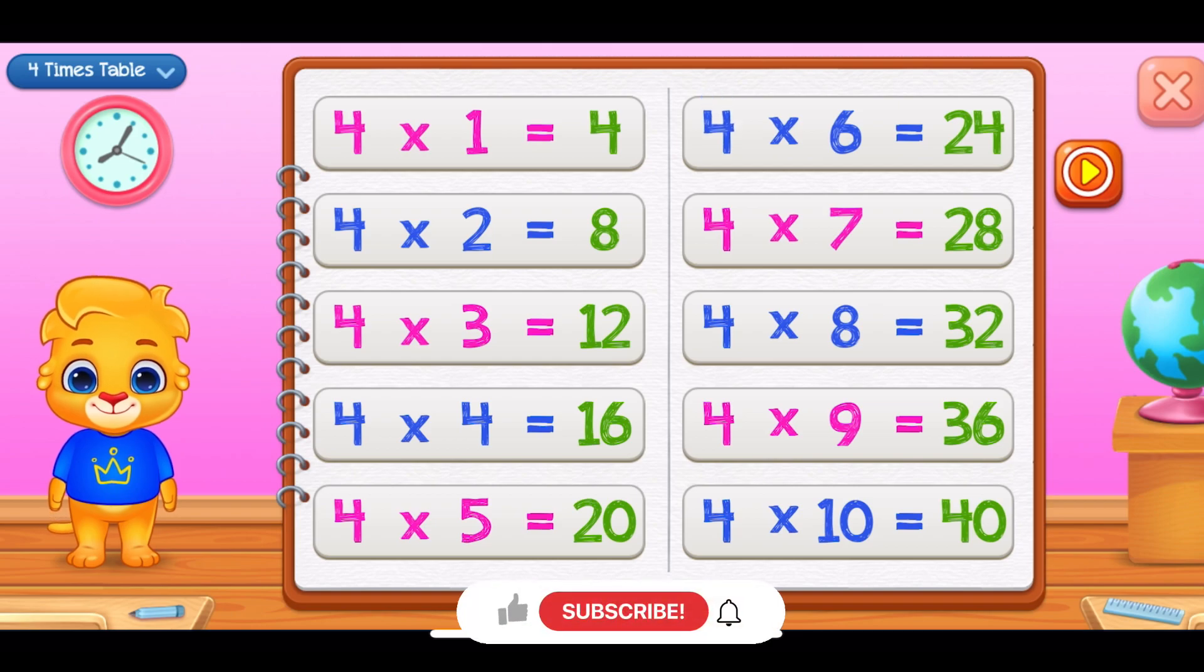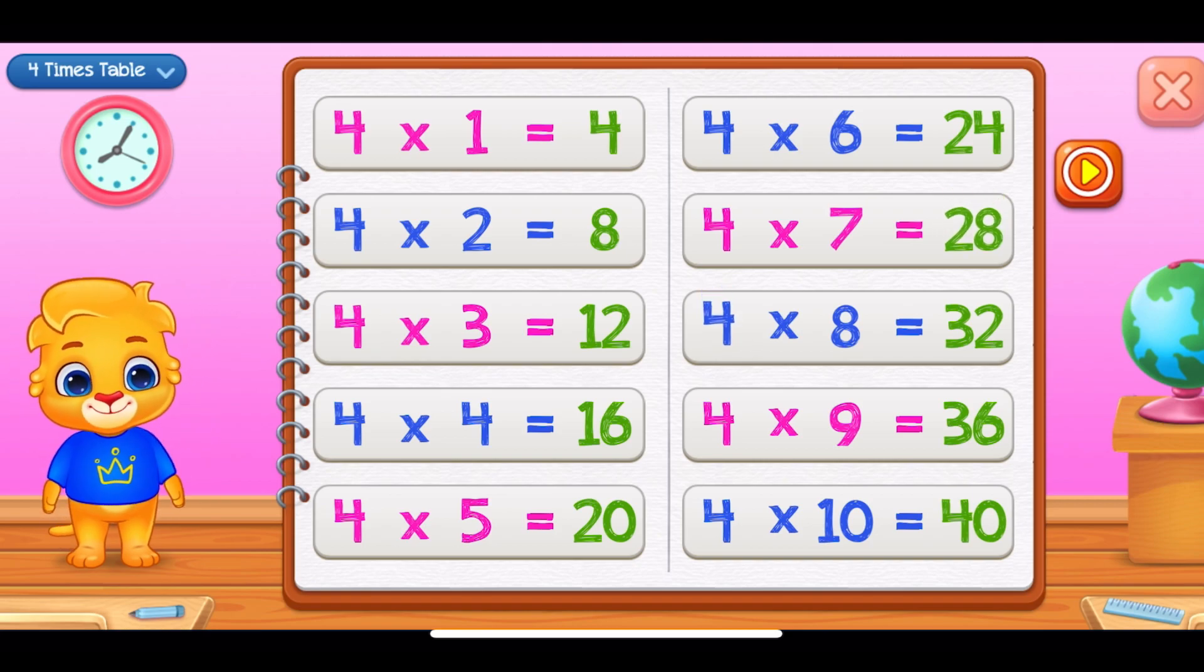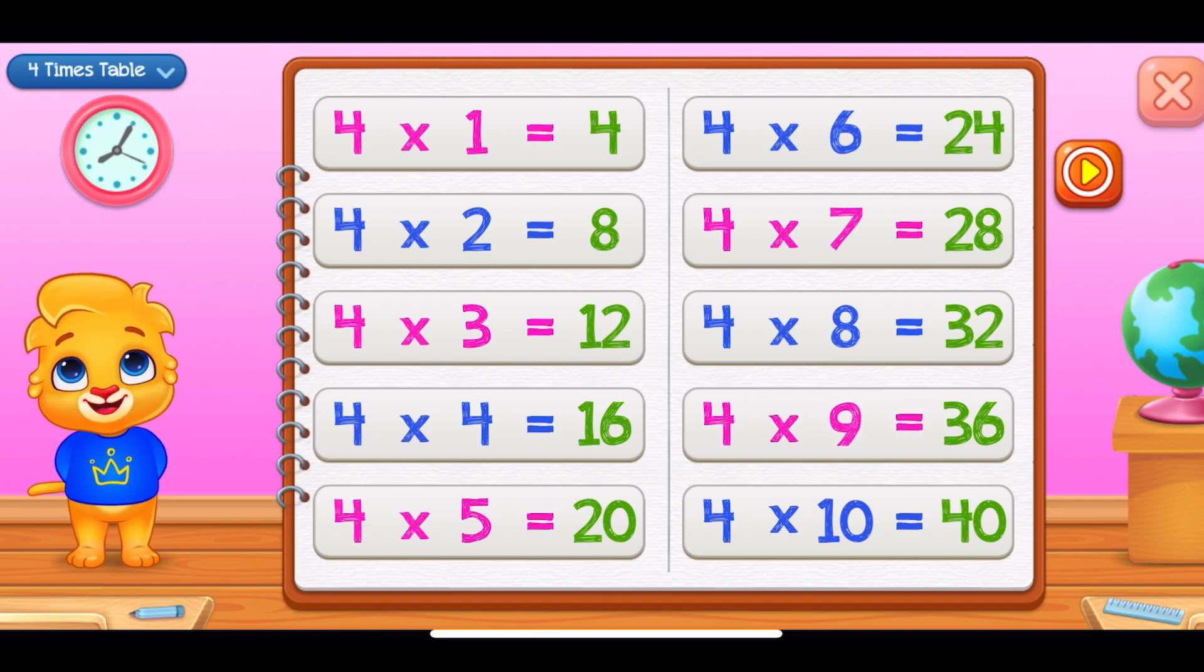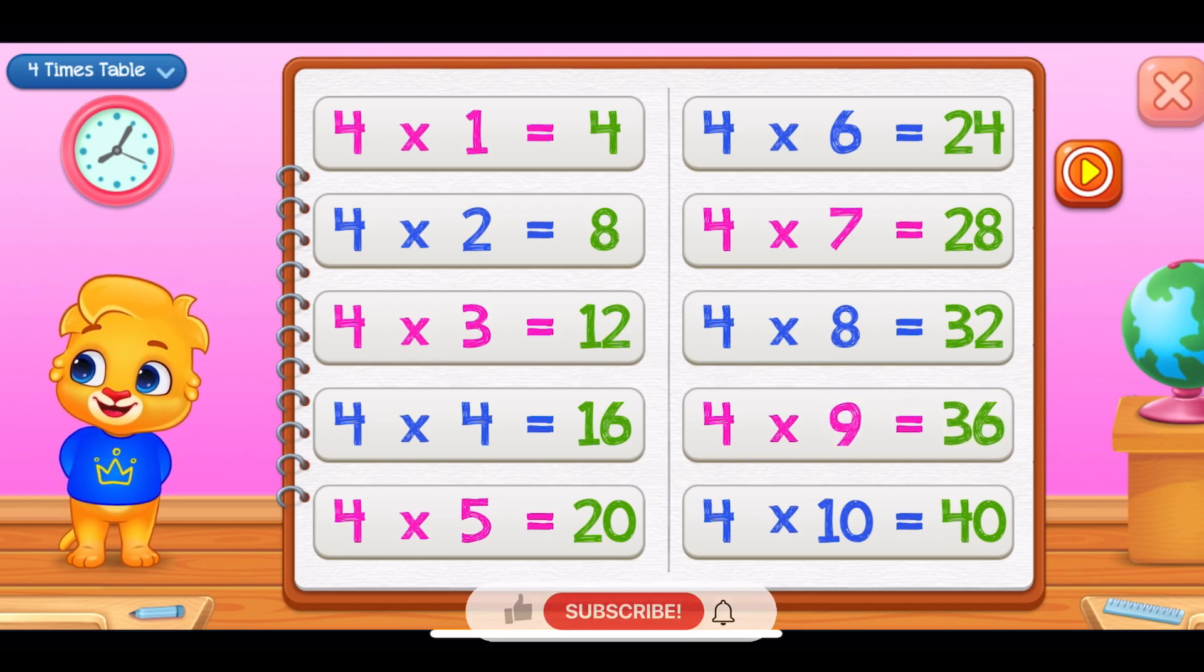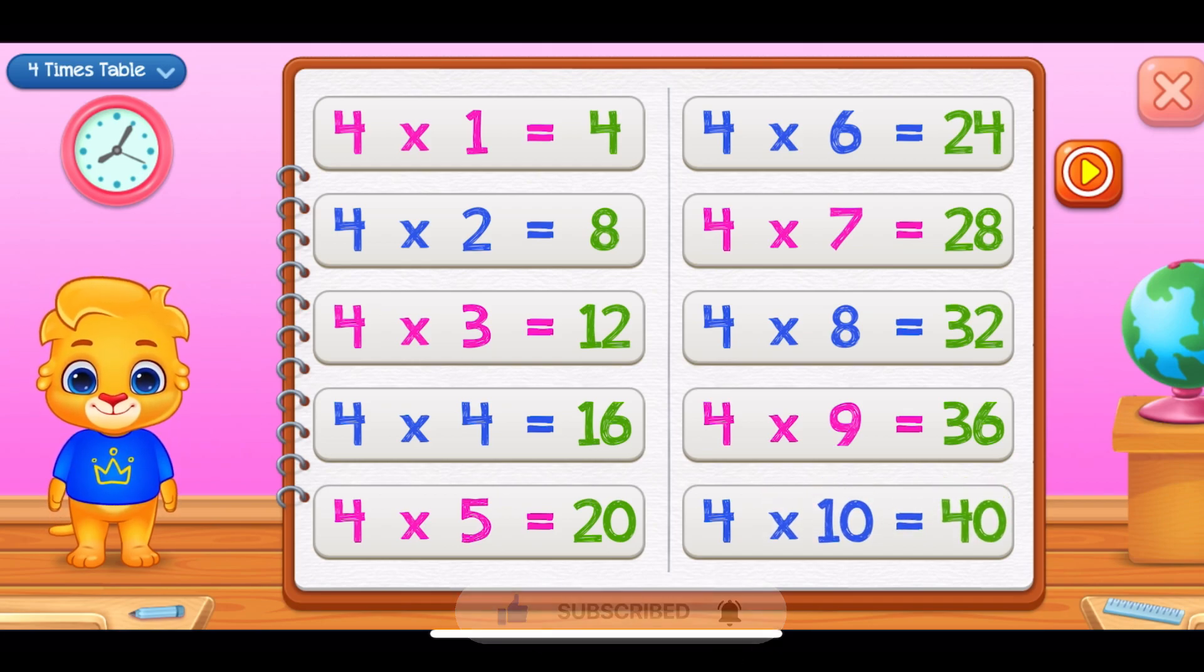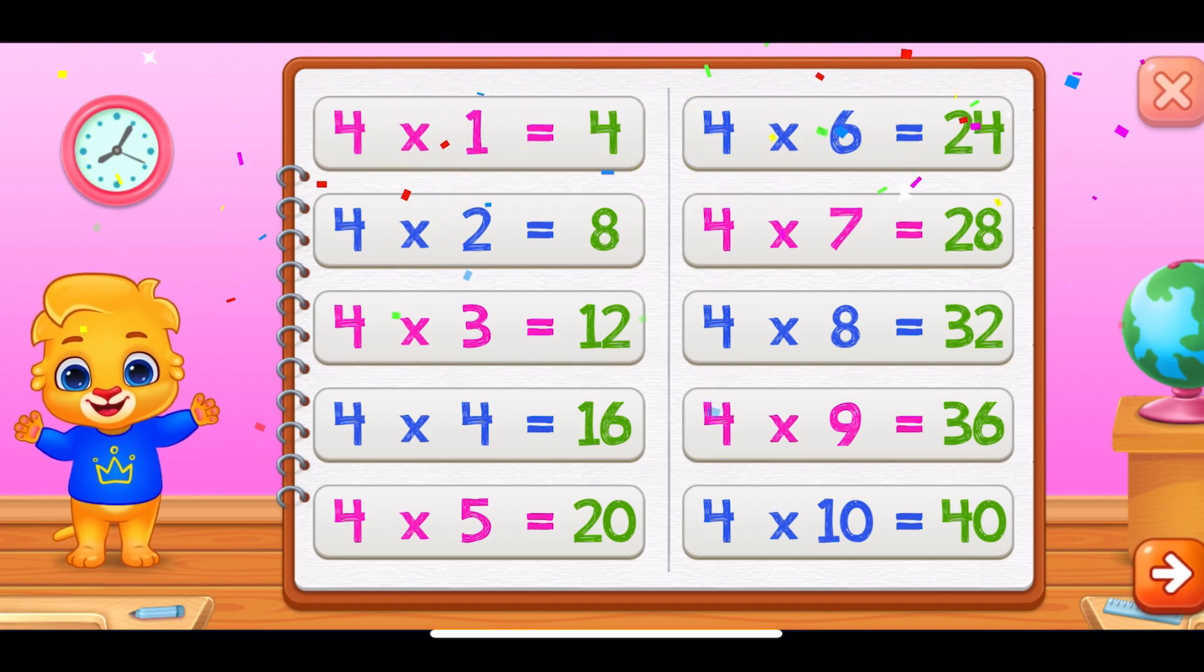4 times 6 equals 24. 4 times 7 equals 28. 4 times 8 equals 32. 4 times 9 equals 36. 4 times 10 equals 40.